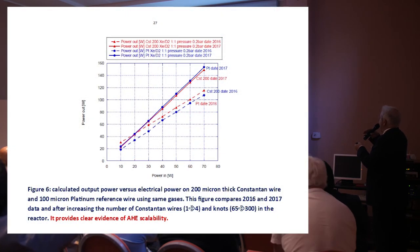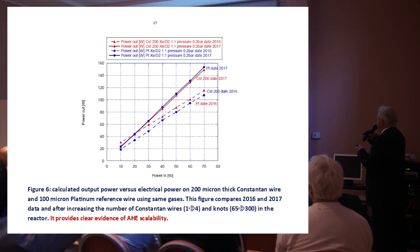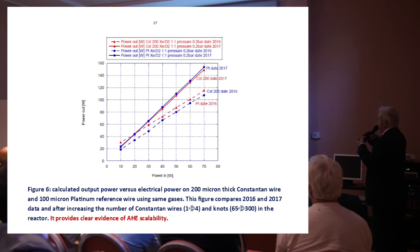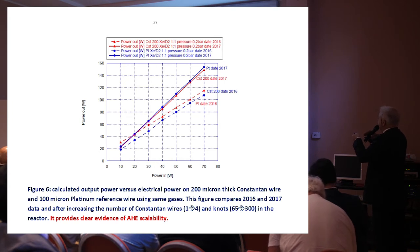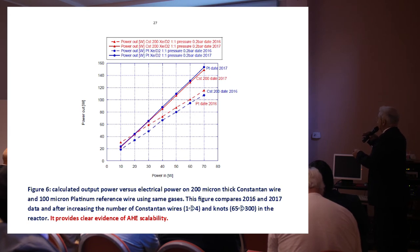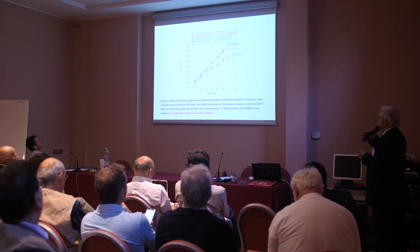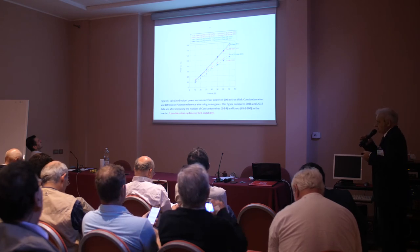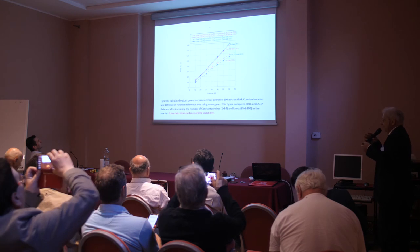Comparing the previous 2016 experiment with only 100 nodes to the most recent with 370 nodes: with the same input power, higher power is emitted — just by increasing the number of nodes. This is very strange and very nice, because no extra energy is given to the system. The COP factor is a little more than two, and we have a clear path to improve further.